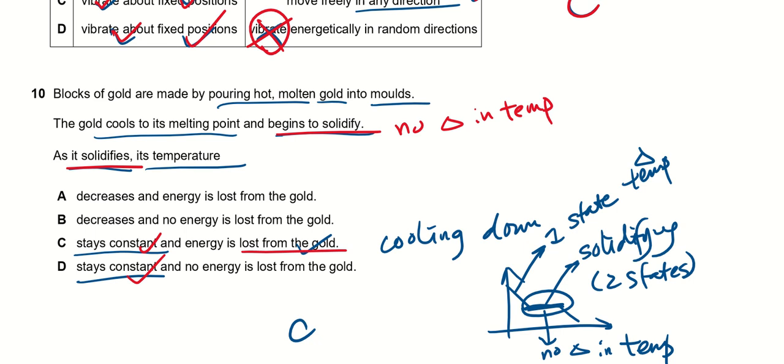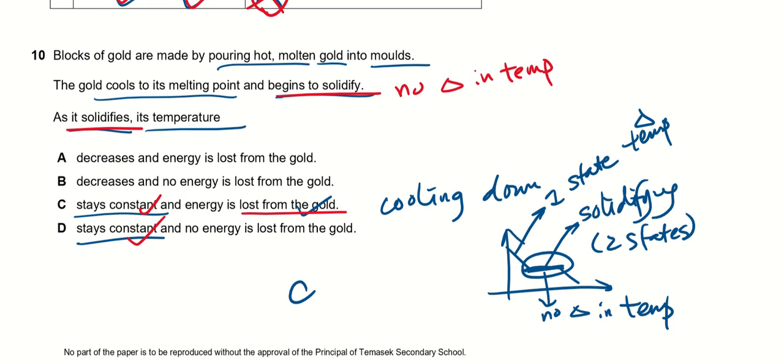And energy is lost from the gold because it is cooling down. So you can actually draw a cooling curve. I think I said in class, when it's a slope, it is one state, that means changing temperature. When it is flat, it is changing states. There are two states here. So when it's flat, changing state, no change in temperature.